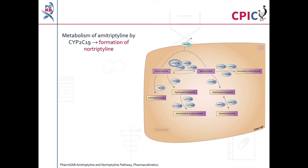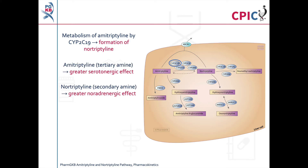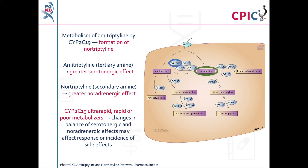Amitriptyline is metabolized by CYP2C19 to nortriptyline, which is an active metabolite. Amitriptyline is a tertiary amine with a greater serotonergic effect, while nortriptyline is a secondary amine with a greater noradrenergic effect. In CYP2C19 ultra-rapid, rapid, or poor metabolizers, there can be changes in the balance of serotonergic and noradrenergic effects, with greater noradrenergic effects in ultra-rapid and rapid metabolizers and greater serotonergic effects in poor metabolizers. This may affect response or incidence of side effects.